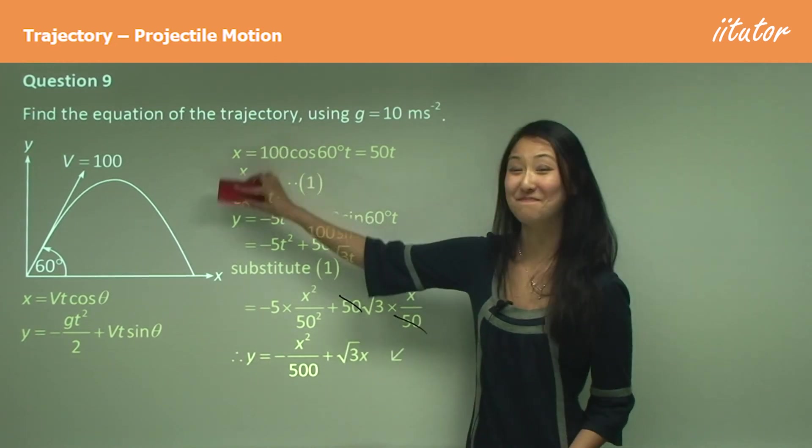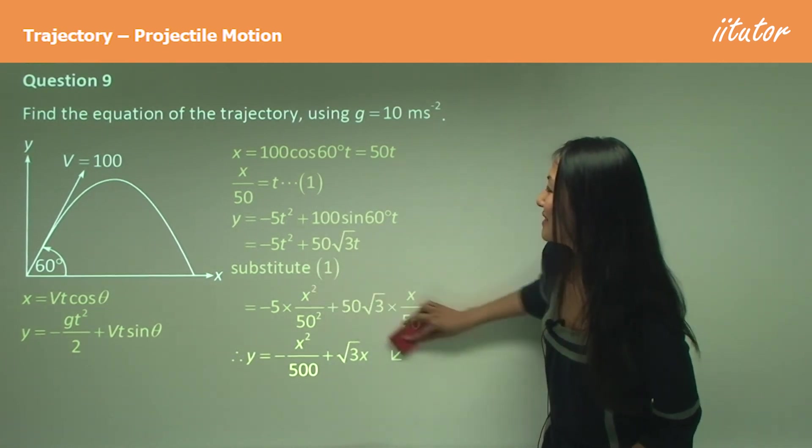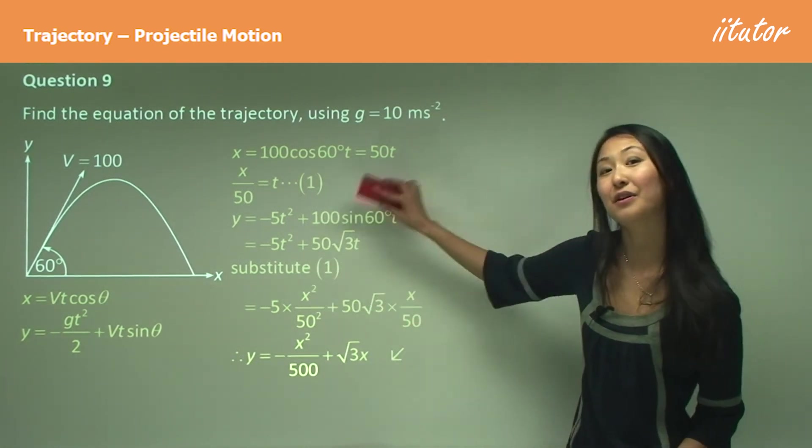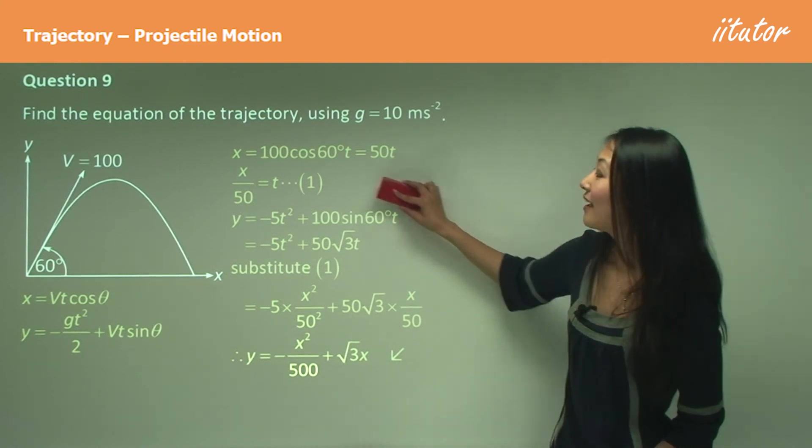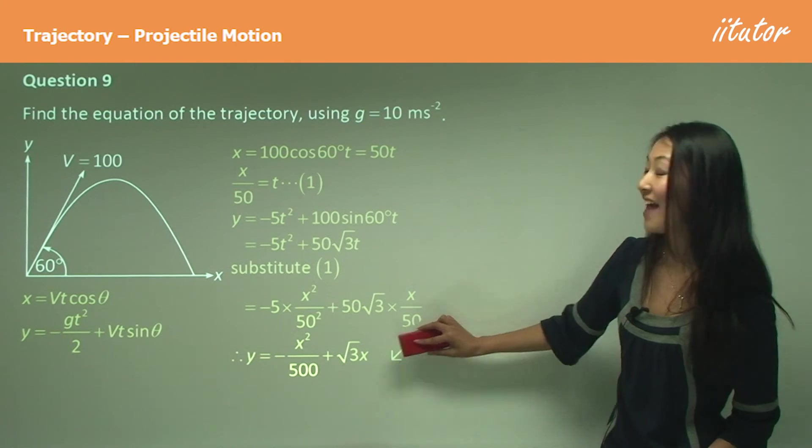And then we simplify our vertical motion equation, eliminate the t's by substitution, simplify again, and then we have our answer there.